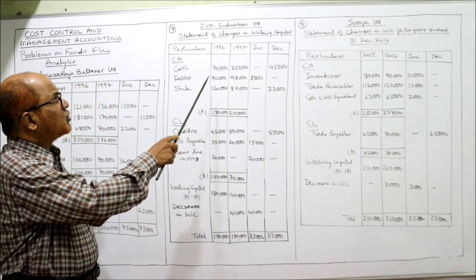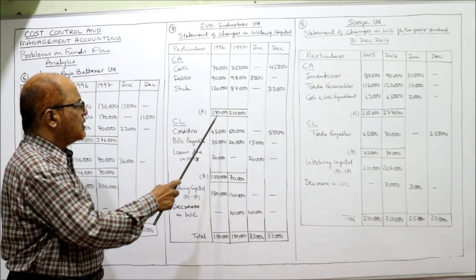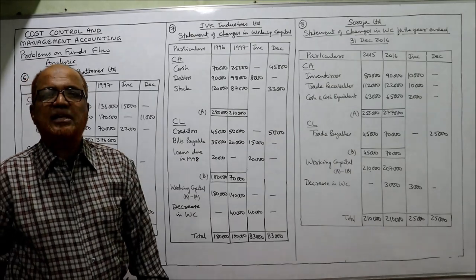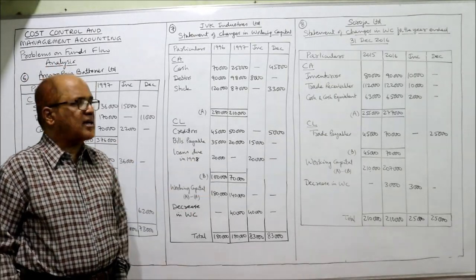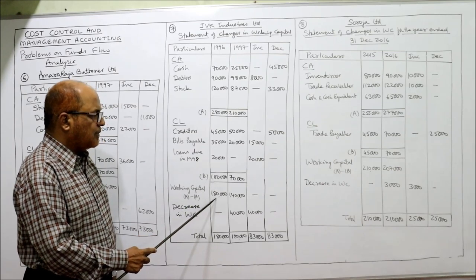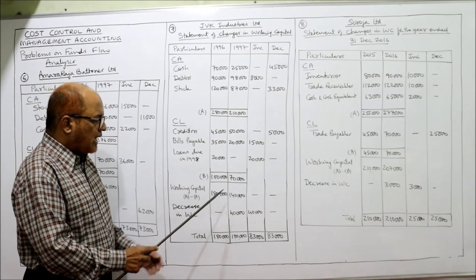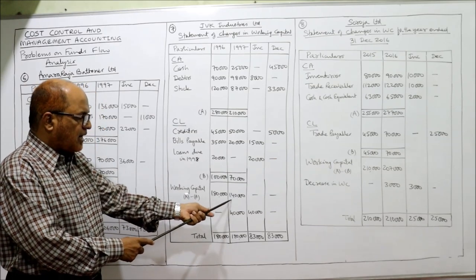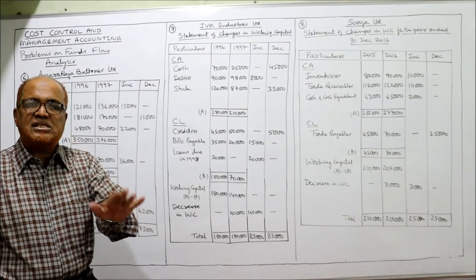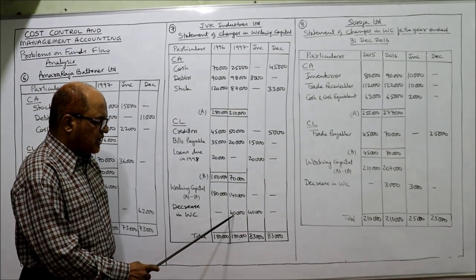Working capital: 2,80,000 minus 1,00,000 equals 1,80,000 last year. Current year: 2,10,000 minus 70,000 equals 1,40,000. There is a decrease in working capital by 40,000 — from 1,80,000 to 1,40,000. When there is decrease in working capital, take the amount in the increase column — opposite rule. Write 40,000 in the increase column. Both sides become equal at 1,80,000.